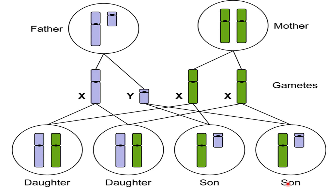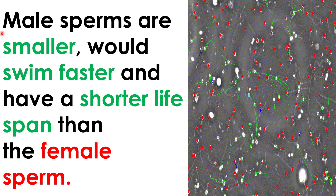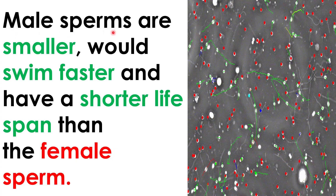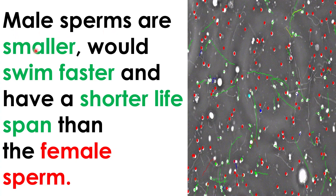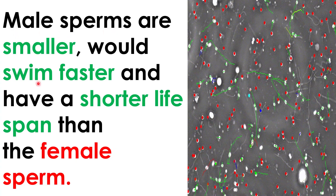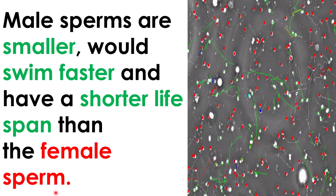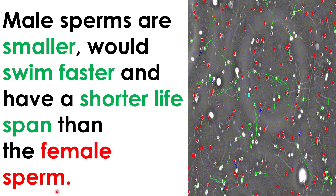Now, how can you increase the chances of having a son? As we can see from this image, the Y chromosome in males is responsible for having a son. The Y chromosomes, also known as male-forming sperms, are smaller, they swim faster, and they have a shorter life than the female sperms, meaning X chromosome sperms.